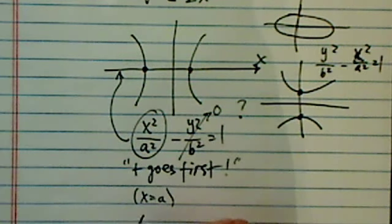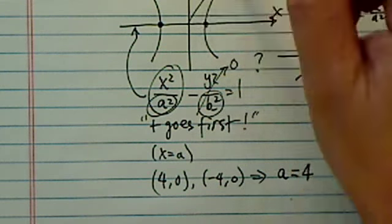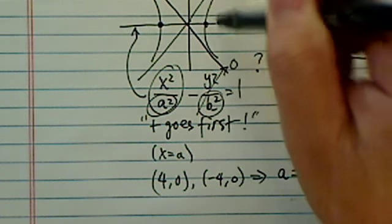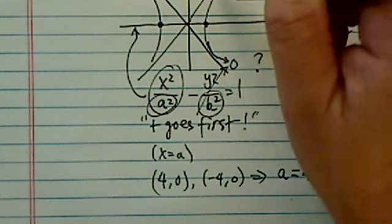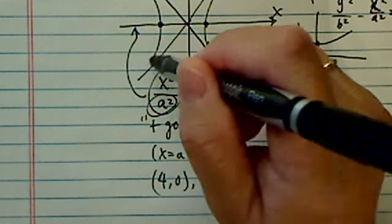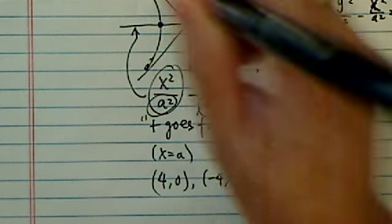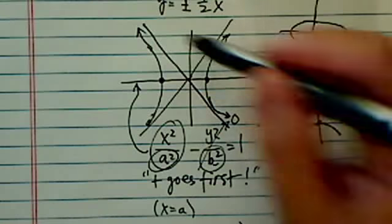we can safely arrive the conclusion that a is equal to 4. So that's one variable left to go. So we need to find b. Now the asymptotes are kind of like cross safeguards for this curve.